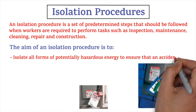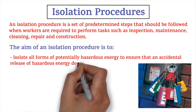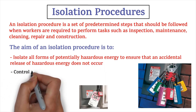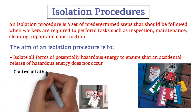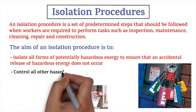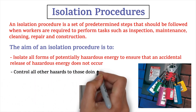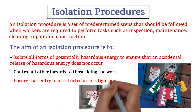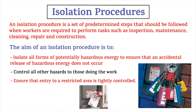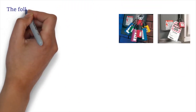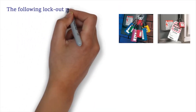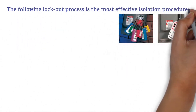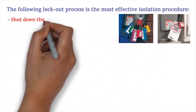The aim of an isolation procedure is to isolate any form of potentially hazardous energy to ensure that an accidental release of hazardous energy does not occur, to control all other hazards to those doing the work, and to ensure that entry to a restricted area is tightly controlled.